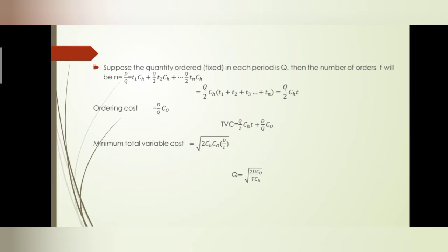The holding cost components are: Q/2 into t1 into CH, plus Q/2 into t2 into CH, plus Q/2 into t3 into CH, and so on up to tn. So the holding cost simplifies to Q/2 into CH multiplied by (t1 + t2 + t3 + ... + tn). The ordering cost is D/Q into CO.